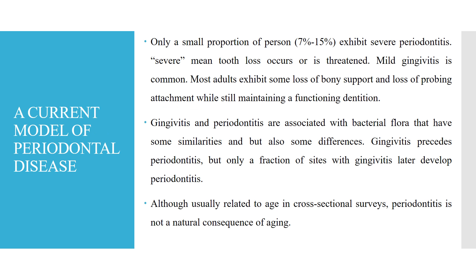A current model of periodontal disease: only a small proportion of persons exhibit severe periodontitis, meaning tooth loss occurs or is threatened. While gingivitis is common, most adults exhibit some loss of bony support and loss of probing attachment while still maintaining a functioning dentition. Gingivitis and periodontitis are associated with bacterial flora that have some similarities but also some differences. Gingivitis precedes periodontitis, but only a fraction of sites with gingivitis later develop periodontitis.